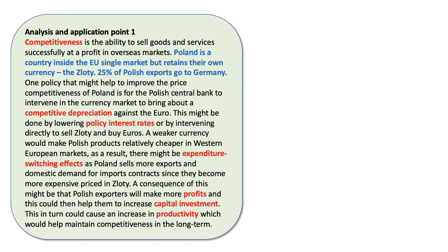One policy that might help improve the price competitiveness of Poland is for the central bank to try to manipulate the exchange rate — to intervene in the currency market perhaps by reducing interest rates or by directly selling the Zloty and buying euros — with a view to depreciating their currency. A weaker currency makes Polish products relatively cheaper in Western European markets like Germany, France, and Holland. That might lead to expenditure-switching effects as demand for Polish exports goes up and demand for imports contracts as they become more expensive. As a consequence, Polish exporters will make more profits, which could help them increase investment, leading to increased productivity and helping to maintain competitiveness in the long term. My core point is that the Polish central bank could try to achieve a competitive depreciation of the Zloty against the euro.